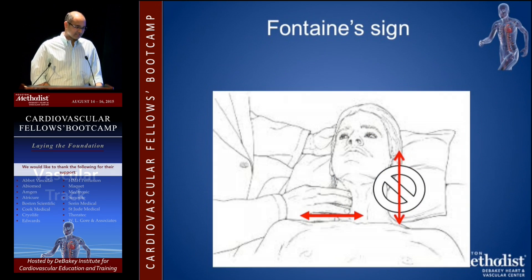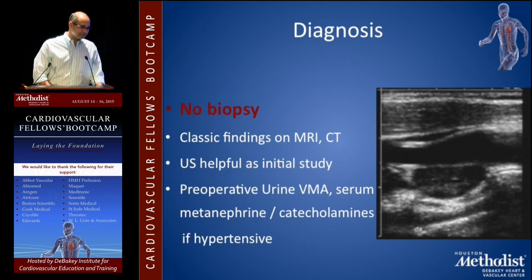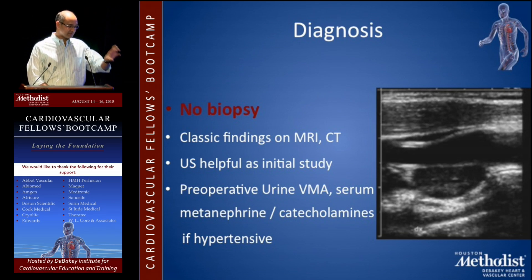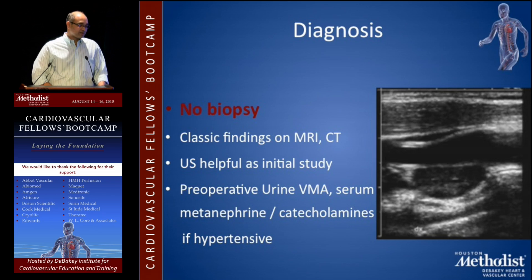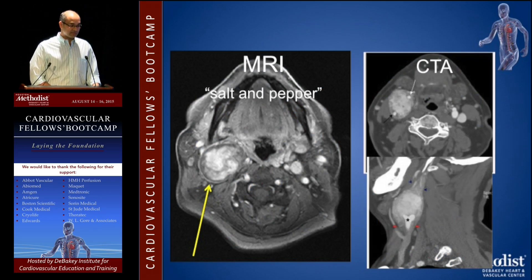Hypertension is also rare. A nice clinical point: since the carotid body sits at the bifurcation, you can move it from side to side but not cranially or caudally — this is called the Fontaine sign. For diagnosis, please never put a needle into this lesion. Classic imaging findings on MRI, CT, or ultrasound show splaying of the bifurcation with a mass in the middle. Preoperative urine VMA and metanephrines are important to identify an underlying pheochromocytoma or a hormonally active carotid body tumor that needs medical treatment first.